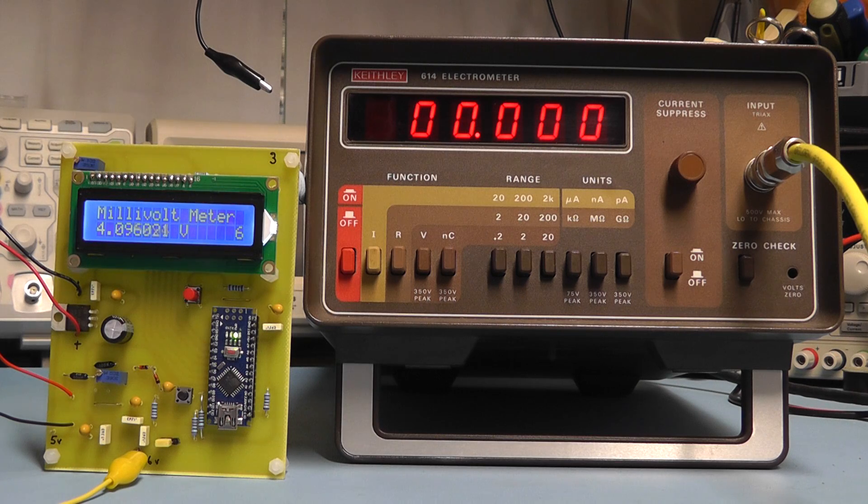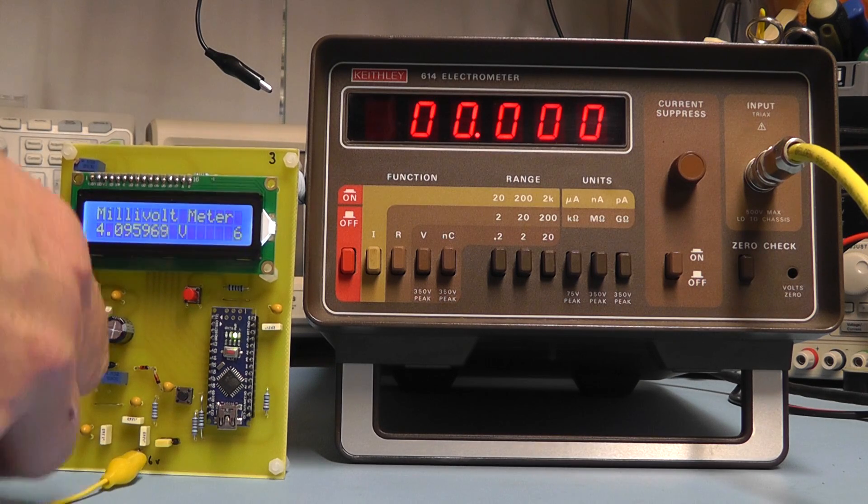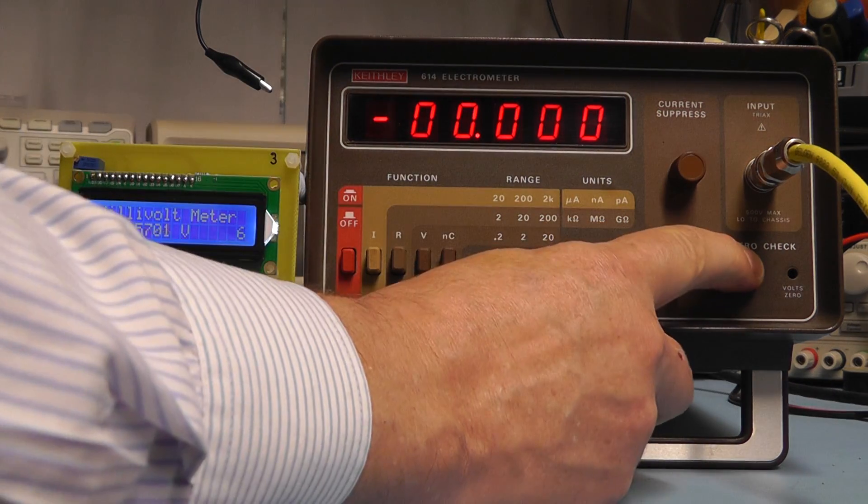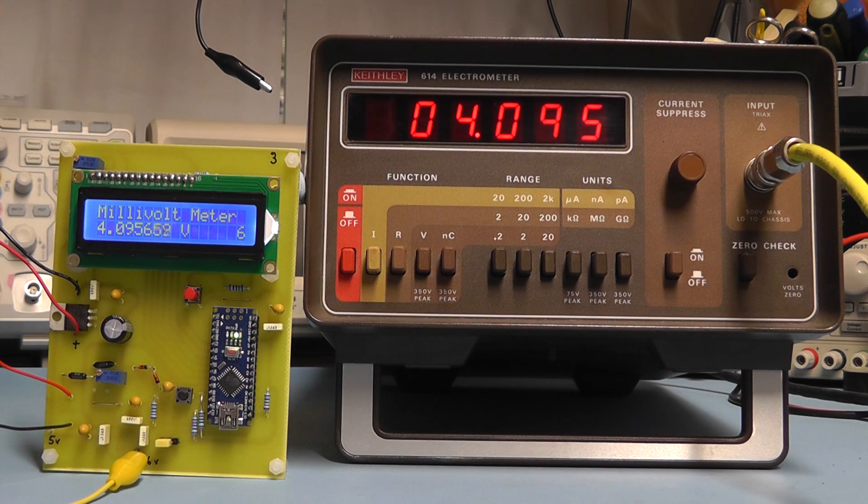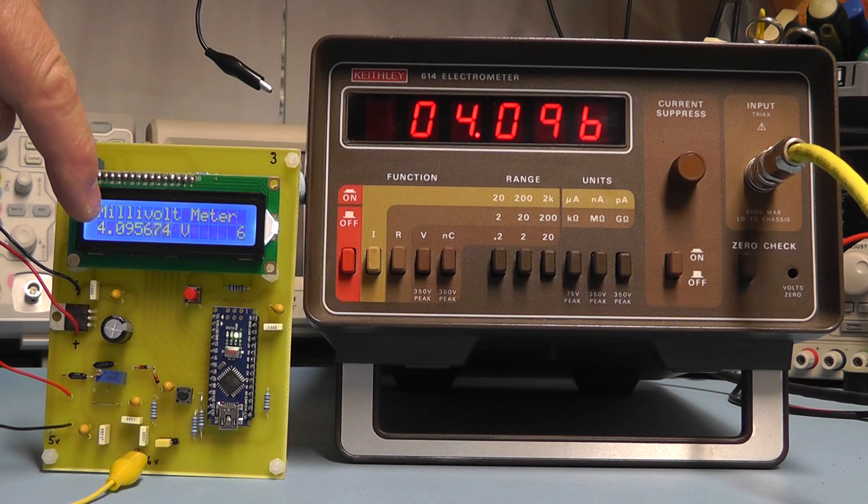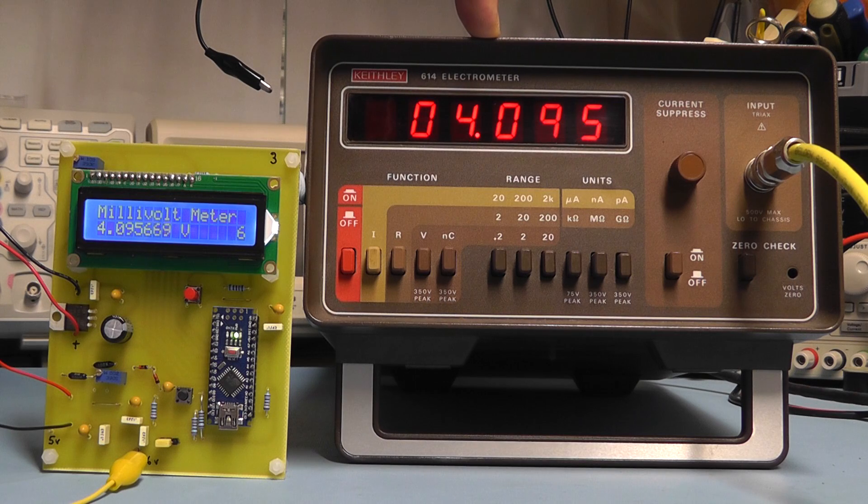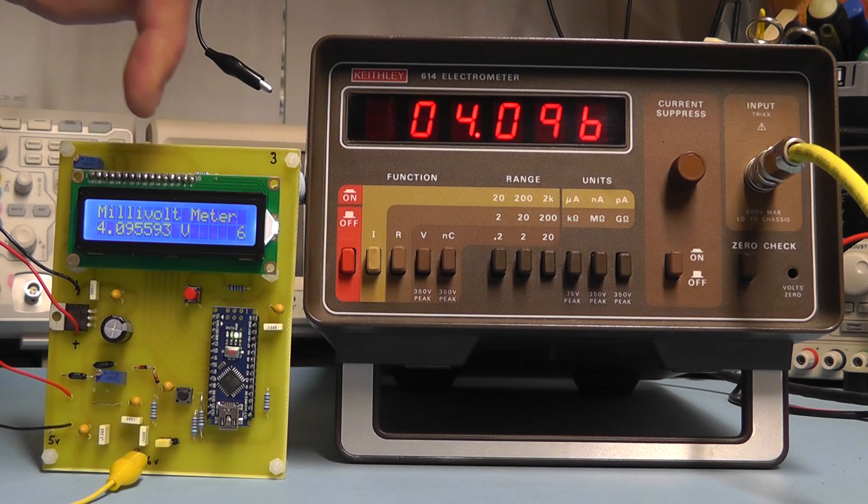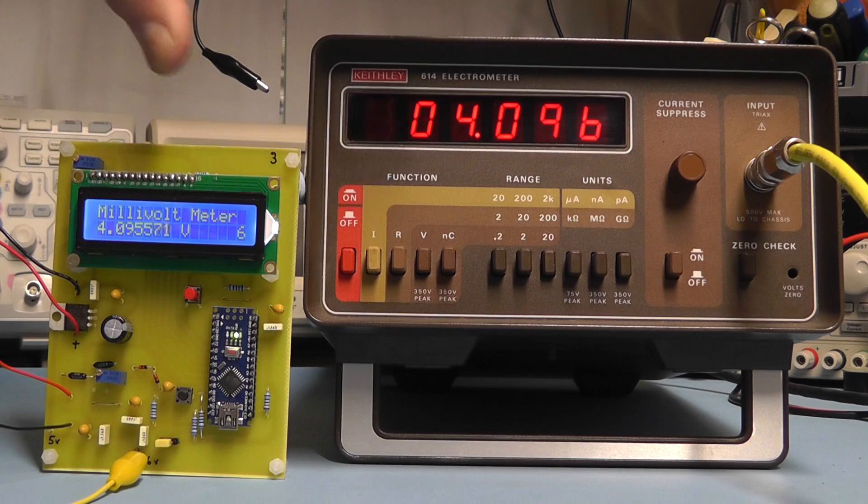And I'll just now compare that reading with the reading on the Keithley here. So let me just connect the Keithley. Yeah and there you can see we've got 4.0956, it's virtually 9-6 at the end there, and the Keithley is reading 4.096, hovering between 5 and 6. So I think you'll agree the accuracy between the millivolt meter here and the Keithley is virtually identical so I'm quite pleased with that.